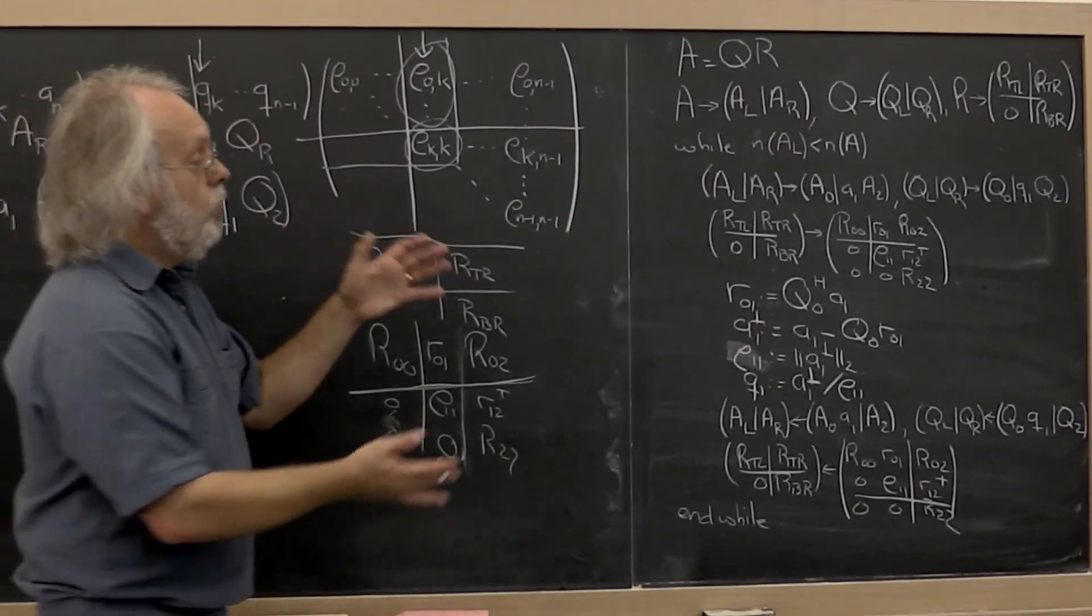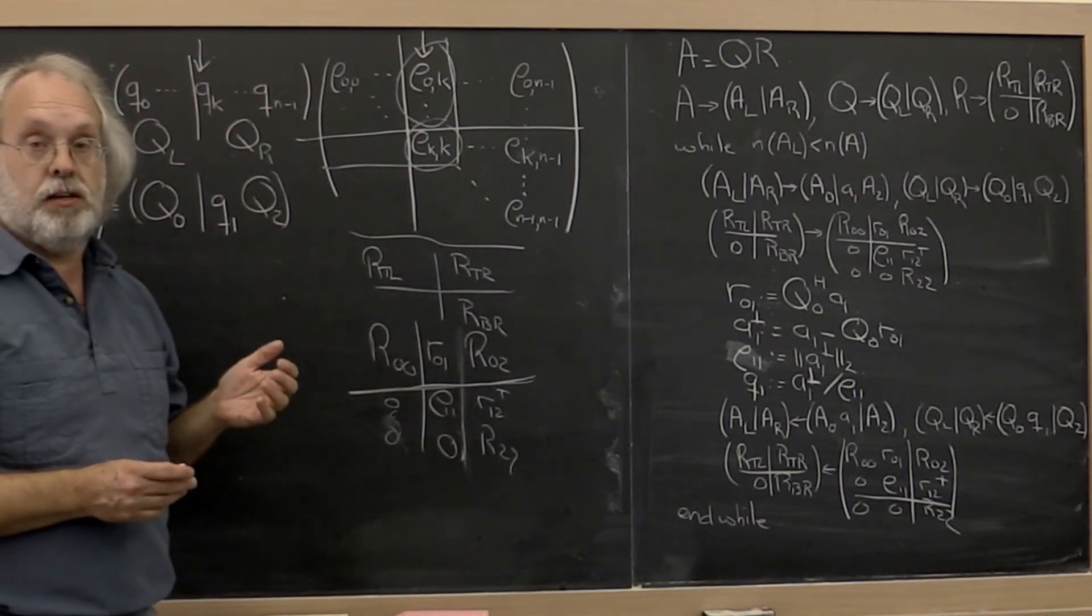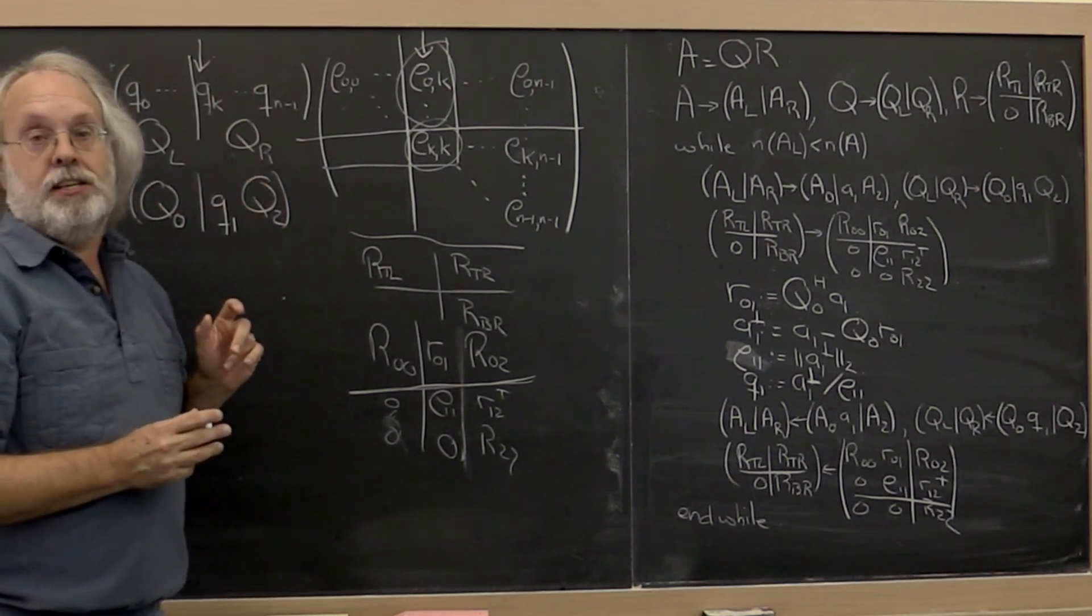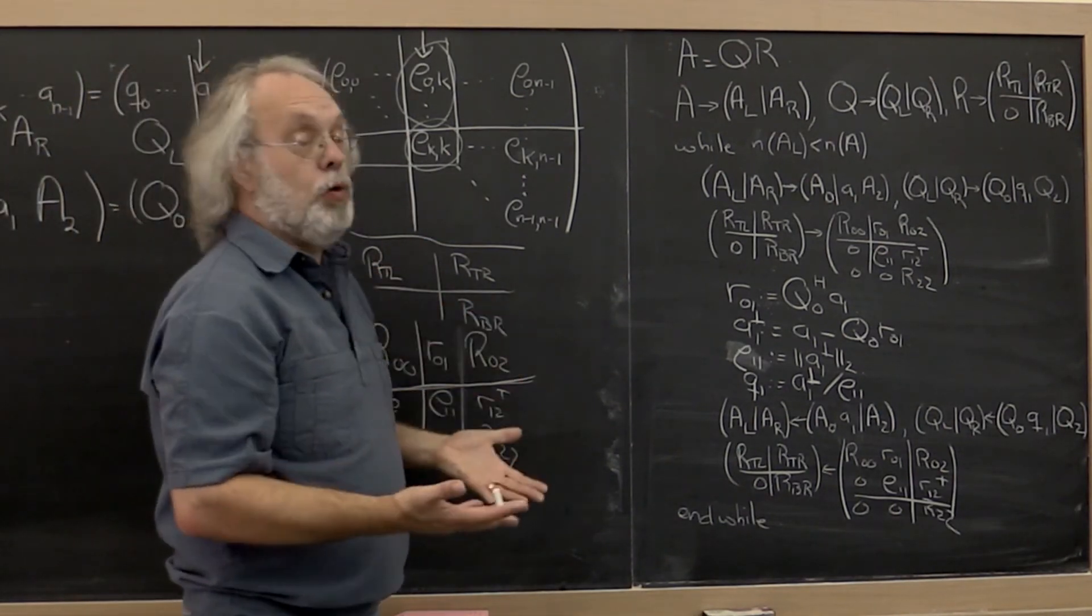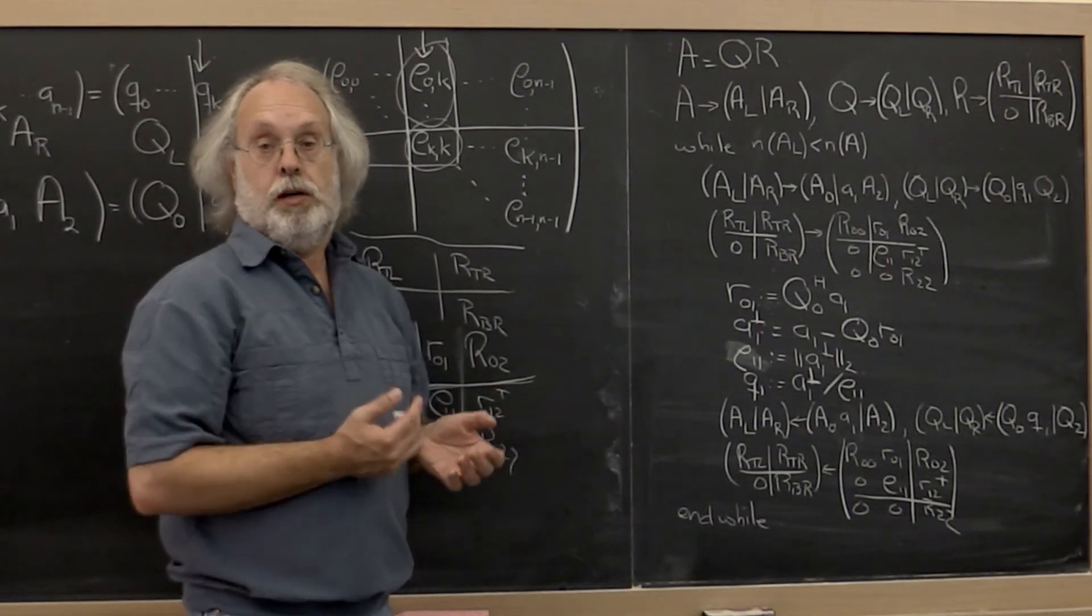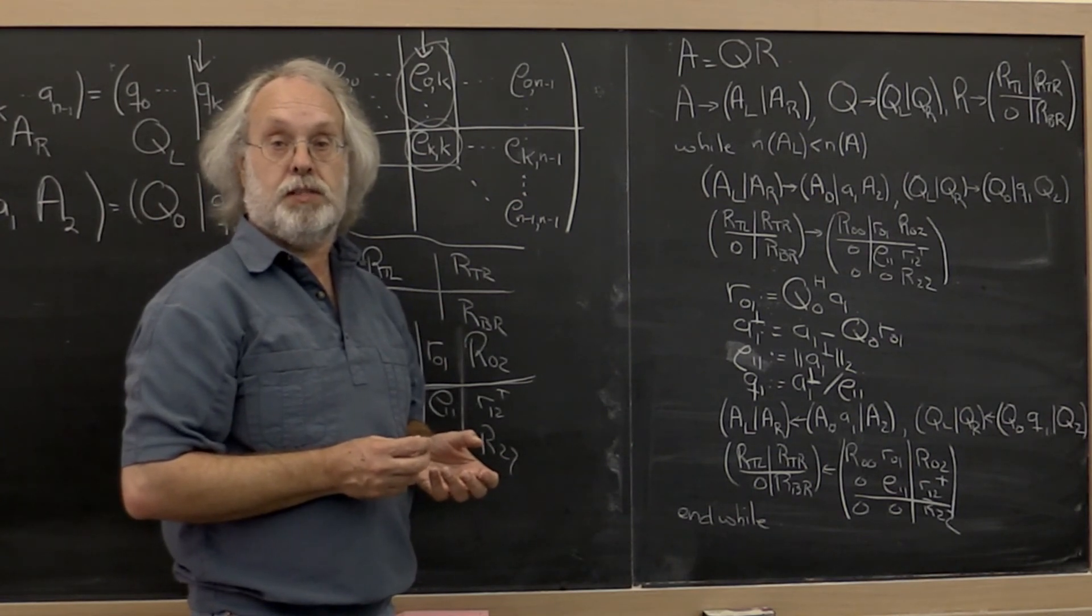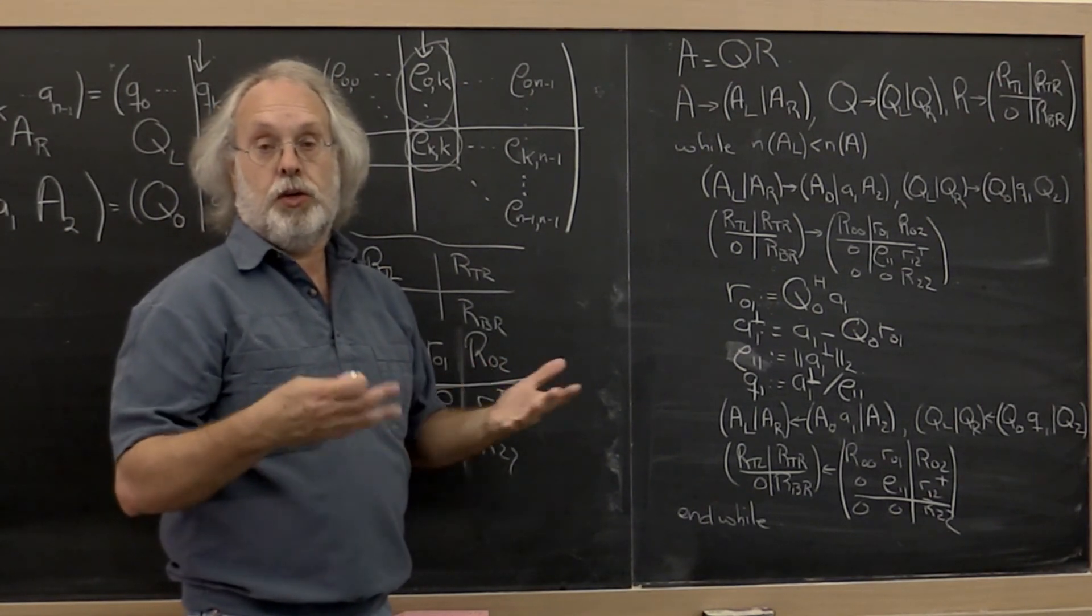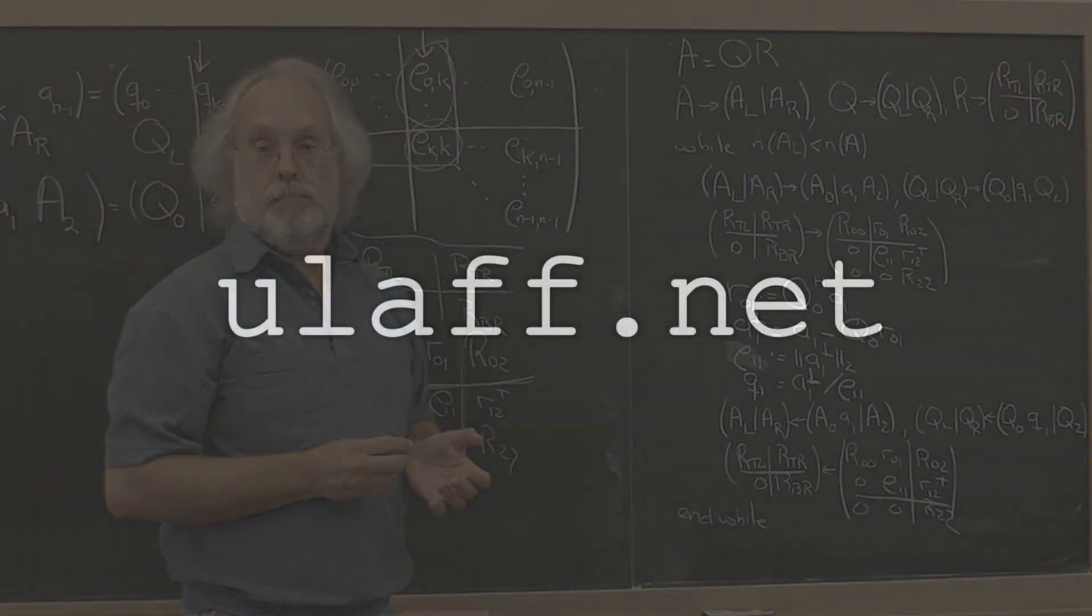So now we have a way of expressing an algorithm for computing the QR factorization that focuses on the regions of the matrices that we should be concerned about. And that's because the QR factorization is equivalent to performing the Gram-Schmidt process, at least this algorithm for computing the QR factorization is. This here also captures an algorithm for executing the Gram-Schmidt orthogonalization process.